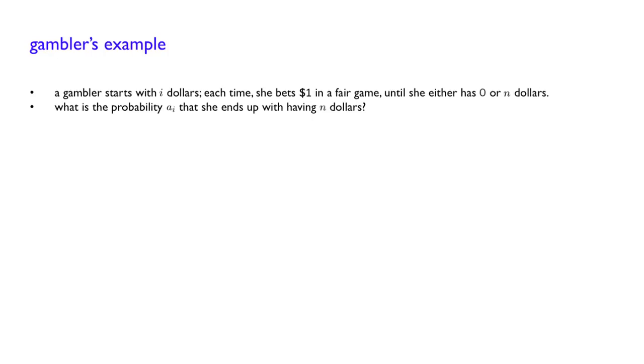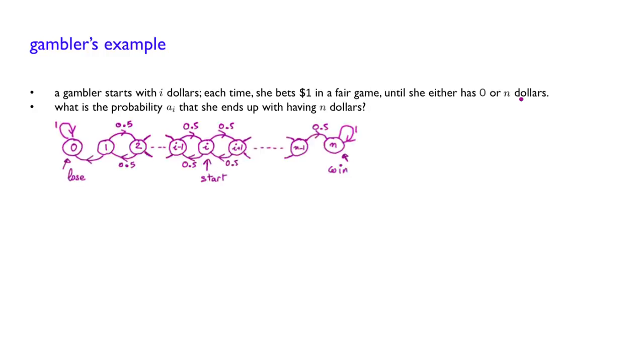Let us think. At any point in time, the only relevant information is the amount of money the gambler has available. How she got to that amount in the past is irrelevant. And if this amount is neither 0 nor n, then she will play again, and the next state will be a number which will be increased or decreased by one unit, depending on winning or losing the next bet. So we can represent the possible evolution of this game with the following probability transition graph.